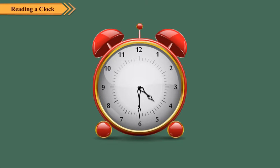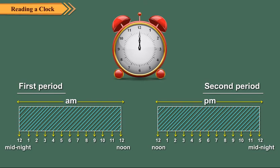In the commonly used 12-hour clock system, the day is divided into two 12-hour periods. The first period is from 12 midnight to 12 noon and is denoted as AM. The second period is from 12 noon to 12 midnight and is denoted as PM. The 12-hour clock system can create confusion if we do not write AM or PM with the morning or evening time.